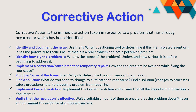There are certain parameters through which we take corrective action. First, we identify and document the issue — here we use the Five Whys method as a questioning tool to determine whether the issue is isolated or has any potential future impact. We ensure this is a real problem and not a perceived problem, because what sounds concerning may not actually be a problem but a fear of that problem. We also need to identify how big the problem is, the scope of the issue, and understand how seriously it can impact the study or clinical trial.